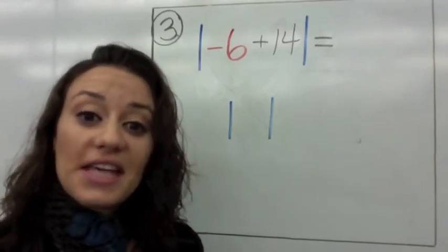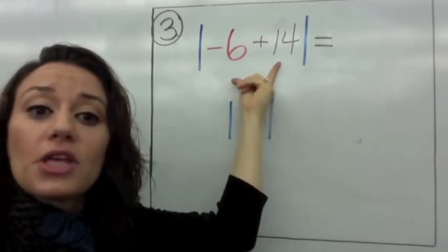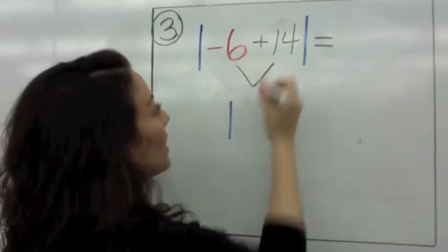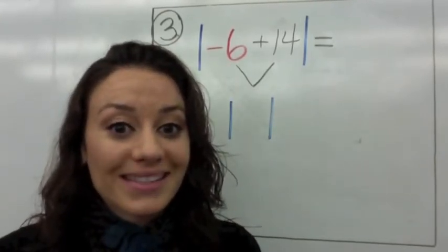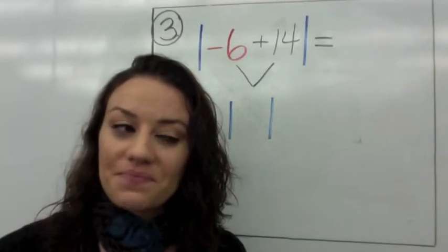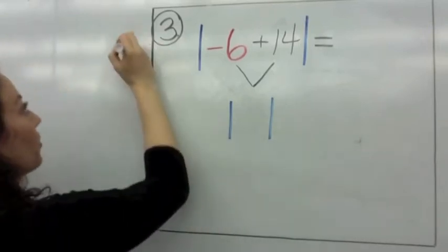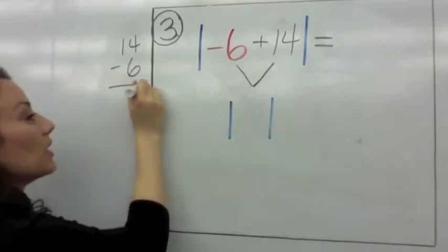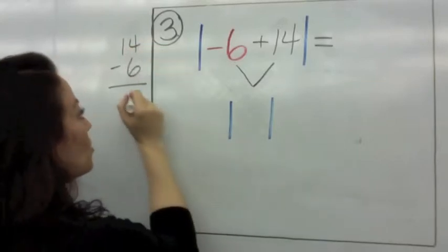Read number 3 with me. It says the absolute value of negative 6 plus 14. We need to do the operations inside the absolute value first. If we have a negative 6 and a positive 14, do they have different signs? Yes, they do. When you have different signs, you say: different signs subtract. So you're going to take 14 minus 6. What is 14 take away 6? 14, 13, 12, 11, 10, 9, 8. So this is 8.